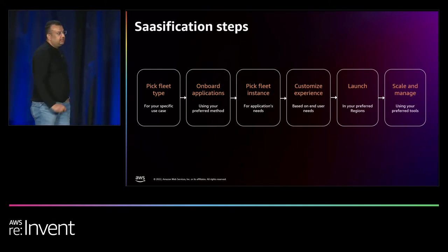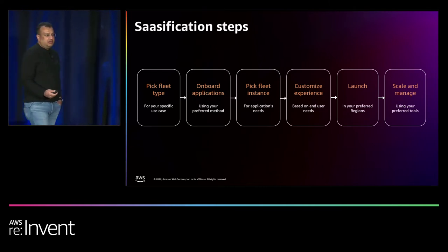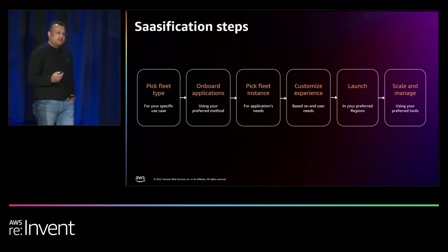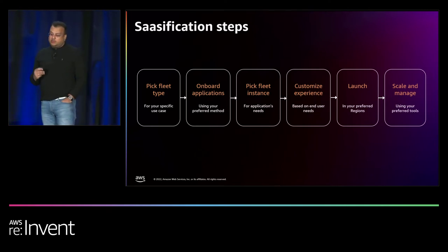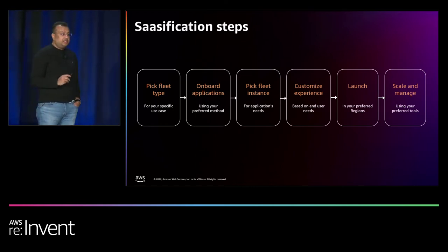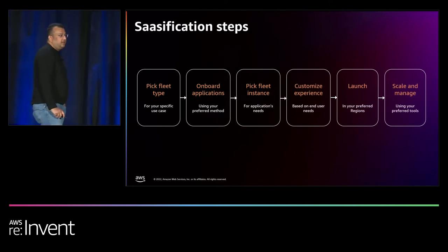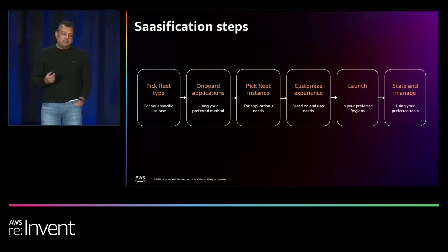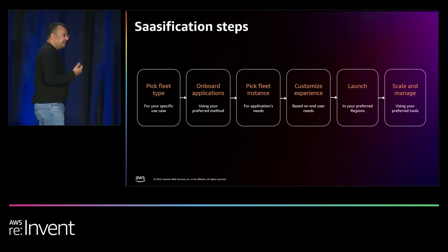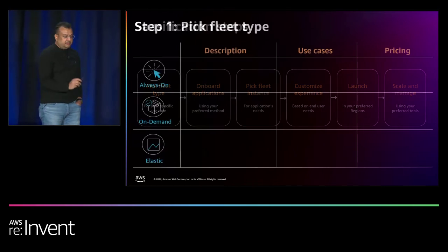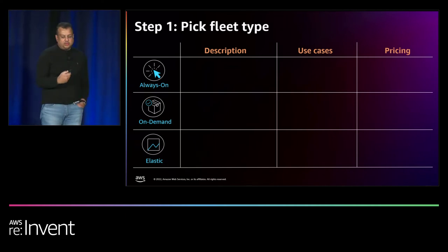You start by picking a fleet type — define your use case: do you need instant-on connection, or do you have predictable usage patterns where instances don't need to run all the time? You then onboard your applications based on the operating system flavor and the precise version you need. You pick the fleet instance based on the graphics and compute power your application requires. You choose the identity mechanism of your choice, customize the experience with your logo and branding, launch in your preferred region, and scale and manage with your preferred tools.